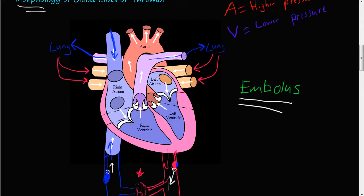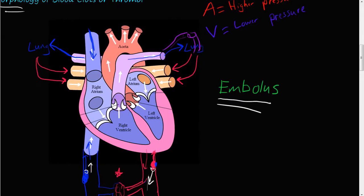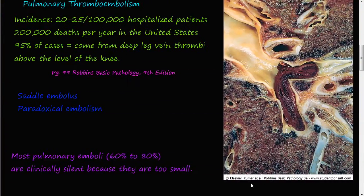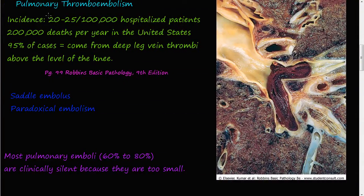The pulmonary circulation narrows from arteries to capillaries, then returns through the pulmonary veins into the left atrium, and the left ventricle pumps blood out the aorta. The vessels get smaller and smaller, so a blood clot — the emboli — will get lodged inside the pulmonary arteries. That is what a pulmonary thromboembolism is.